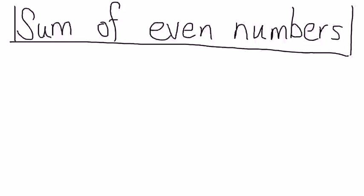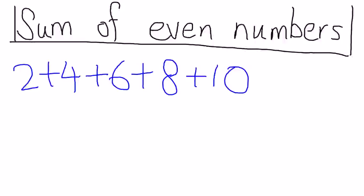So let's start with the first example. In this example, I'm just adding the first 5 even numbers here starting from 2, I add 2, 4, 6, 8, 10 together.